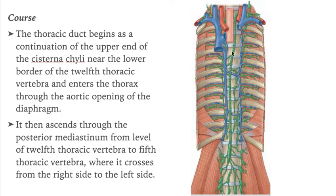The thoracic duct begins as a continuation of the upper end of the cisterna chyli, near the lower border of the 12th thoracic vertebra, and enters the thorax through the aortic opening of the diaphragm.